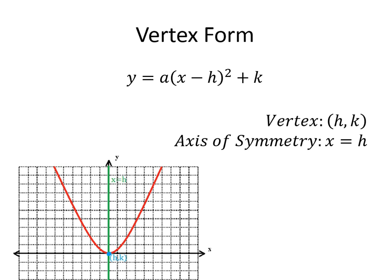Now vertex form is nice because it puts it in a way so that you can easily identify where the vertex is. You don't have to do that negative B over 2A. And this one you just have to identify the H and the K, whatever are in those places, is your vertex. That is your vertex, HK.